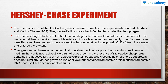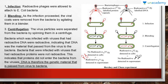Hershey and Chase prepared these two materials. Their experiment had three significant stages: infection, blending, and centrifugation. In infection, radioactive phages were allowed to attach to E. coli. The mixture of E. coli and bacteriophages containing radioactive phosphorus and radioactive sulfur were mixed, and bacteriophages were allowed to attach to E. coli. After infection proceeded, the viral coats were removed from the bacteria by agitating them in a blender.